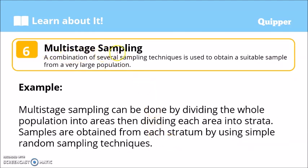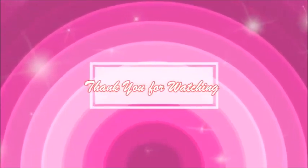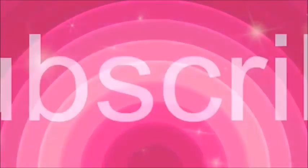Next, we have multi-stage sampling. It is a combination of several sampling techniques used to obtain a suitable sample from very large population. Multi-stage sampling can be done by dividing the whole population into areas - that's cluster sampling, dividing it into areas. And then, dividing each area into strata - that's stratified random sampling. And then, each strata, once you determine how many samples to interview, you can use simple random sampling to identify who your participants will be. So that's multi-stage sampling.